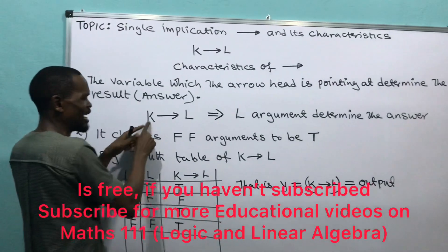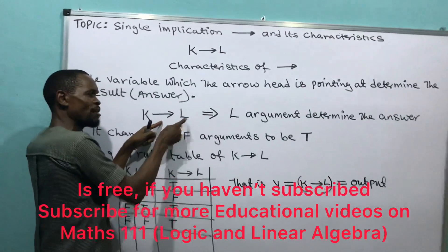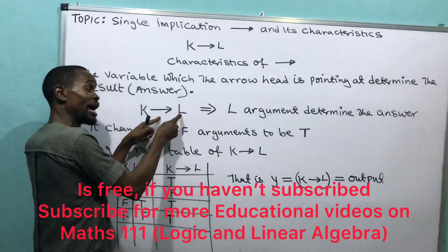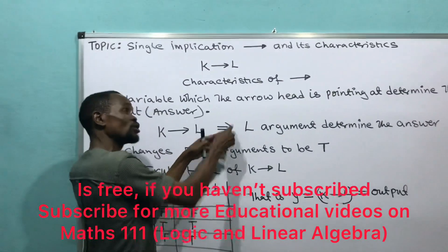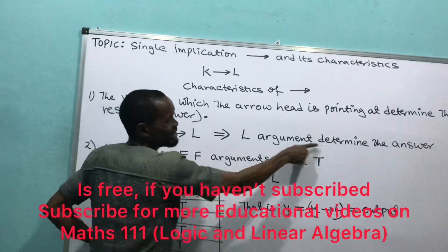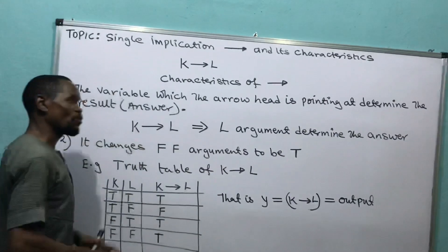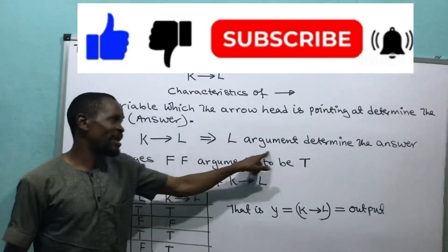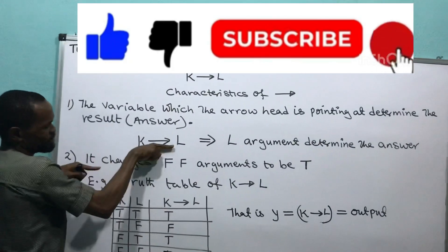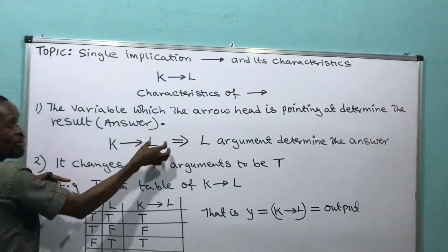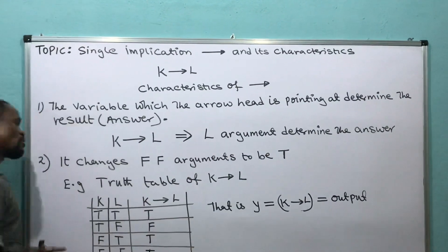For instance, I have K implies L. Look at the variable which the arrow is pointing at. That means L determines the answer. L argument determines the answer. This arrow is pointing at L. Whatever L is, that is what will tell us the answer.